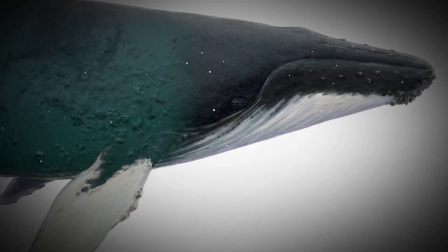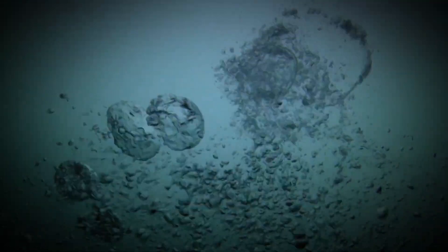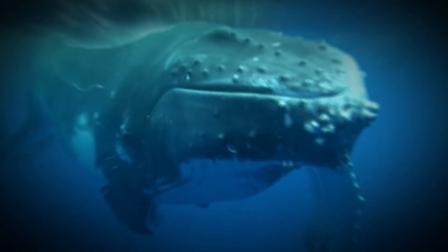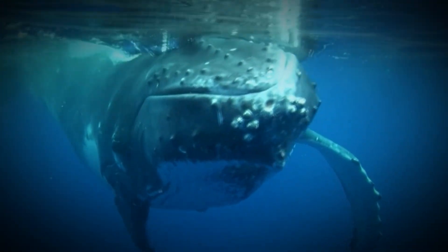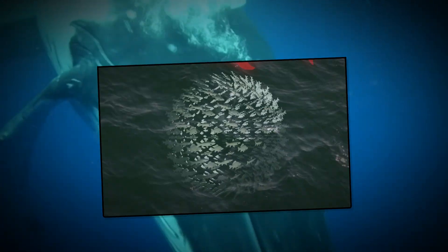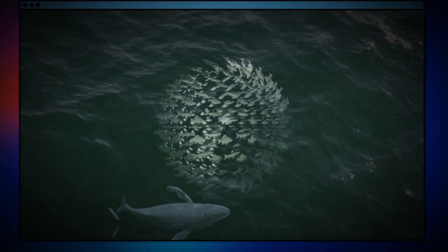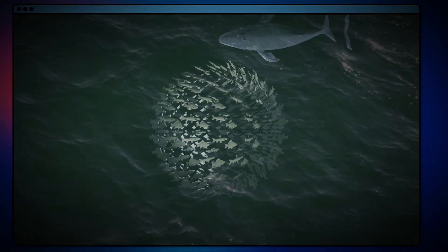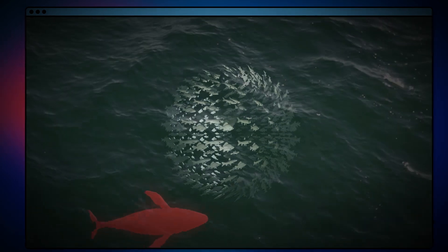First, the humpback whale dives deep down into the water, using its incredible size and power to propel itself through the waves. Once it finds a school of small fish, it starts to swim around them in circles, using its powerful fins to create a current that pushes the fish closer together.